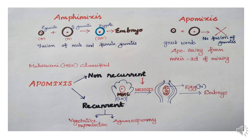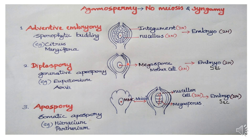Next is agamospermy. The main point of agamospermy is that meiotic division is not involved, and there is no fusion of male and female gametes — no fertilization. So there is no fusion of male and female gametes, but meiosis is not a problem. These cells undergo embryo development.